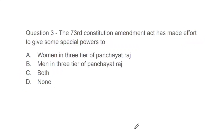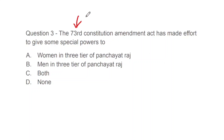Question 3: The 73rd Constitution Amendment Act has made efforts to give some special powers to — women in three tiers of Panchayat Raj, men in three tiers of Panchayat Raj, both, or none? A question from the 73rd Amendment has already come in CUET, so this is very important. The correct answer is A — women in three tiers of Panchayat Raj. I framed this question from C.N. Shankar Rao's book, whose topics directly match the CUET syllabus. I will share screenshots on Telegram for revision.